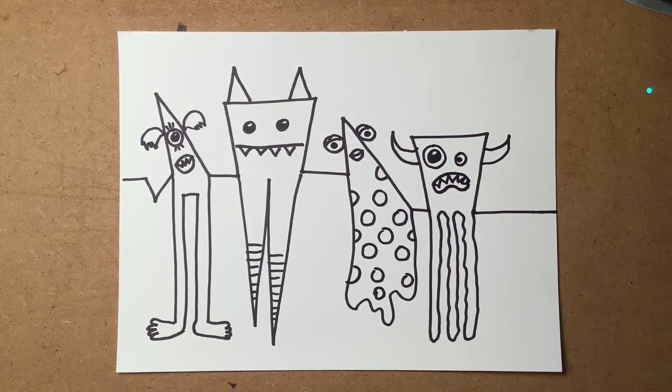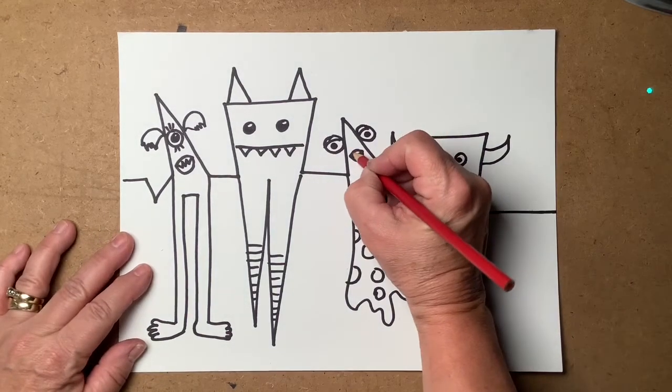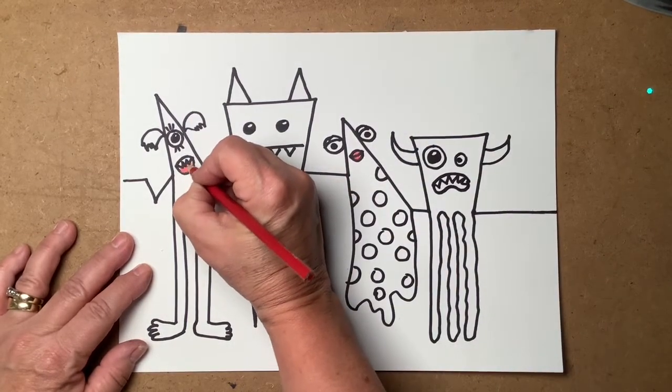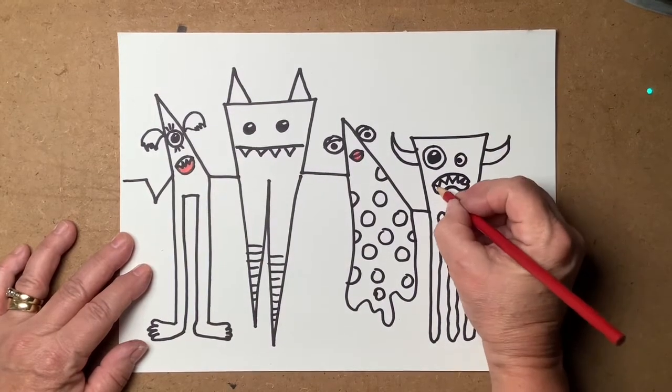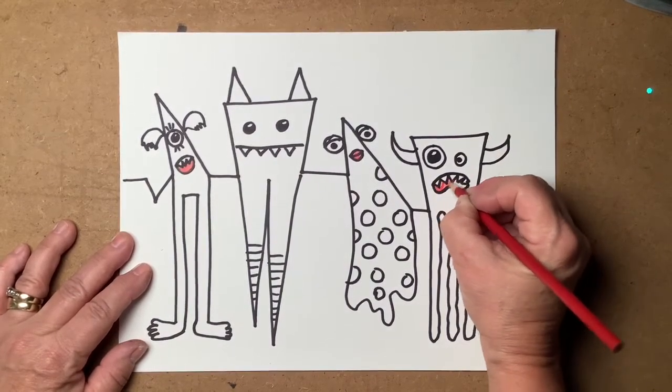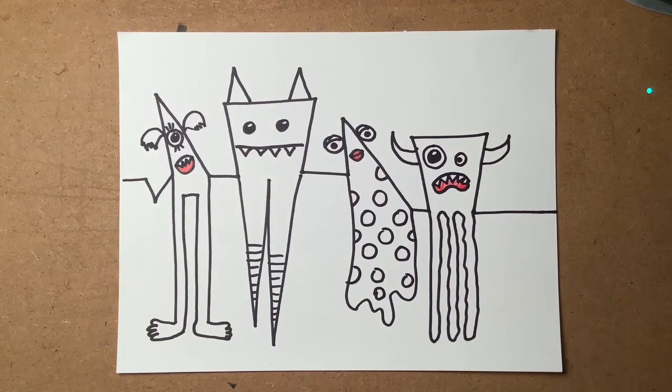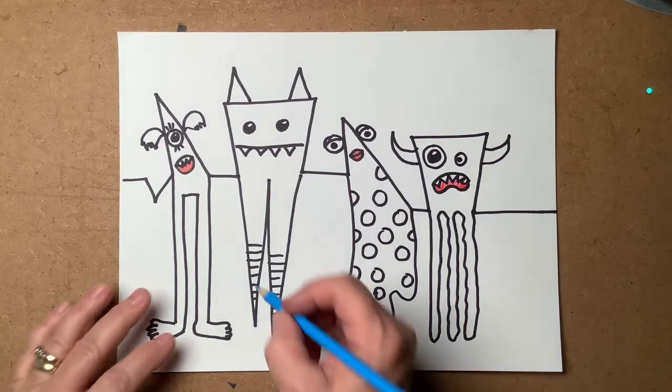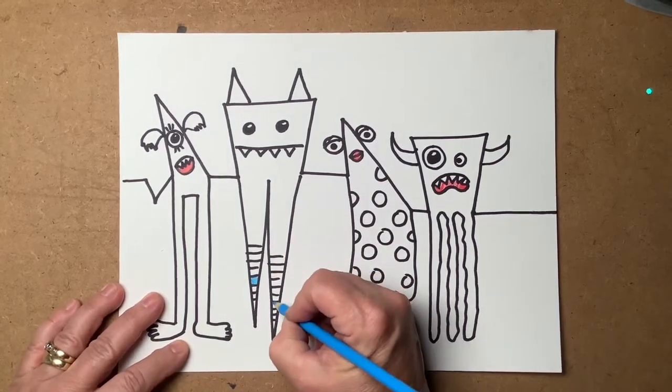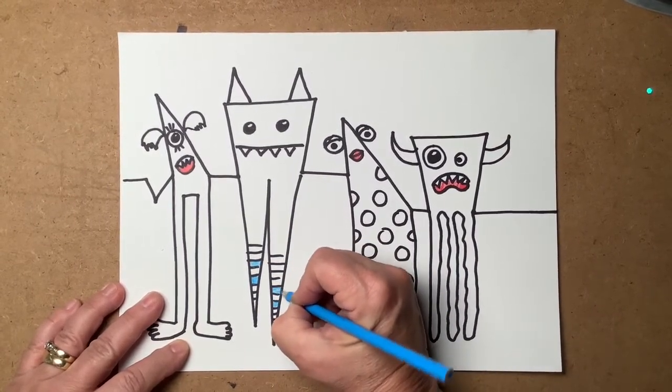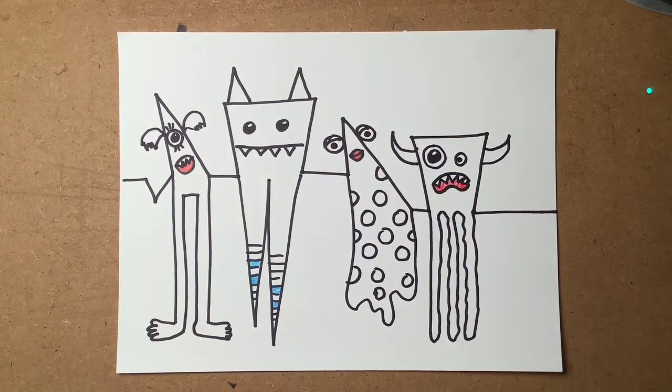I love my little monster party here. I think what I'd like to do is add some color. So I'm going to color in some red areas. I'm going to color in some lips and the inside of the mouth. And I'm going to pick another color. I think I'm going to do some light blue and add some color to this guy's legs. And I'll color in her spots with some teal.